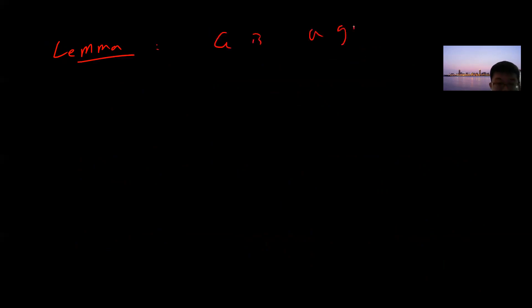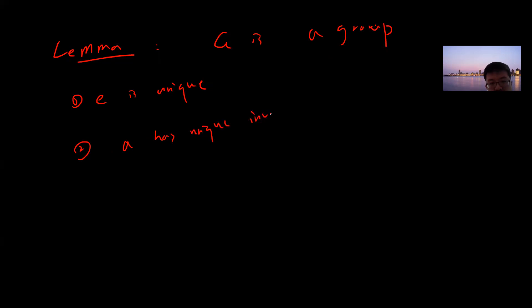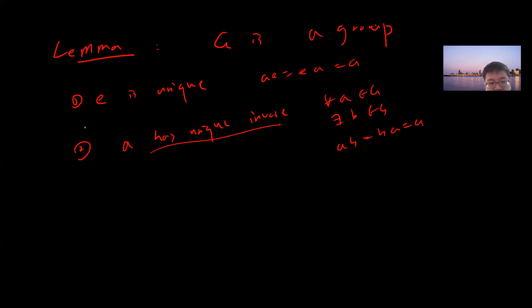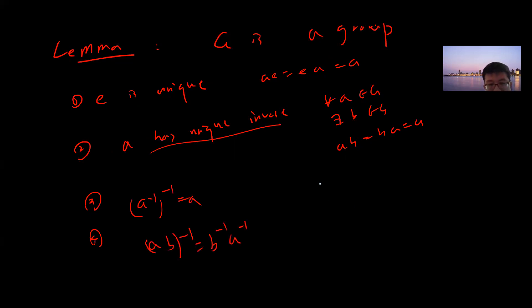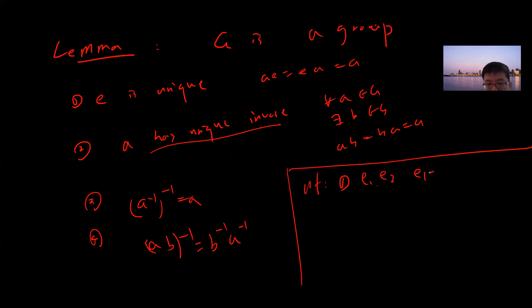Now let's state a lemma with some trivial results. In a group, first, the identity is unique. Second, each element a has a unique inverse. Proof of uniqueness of identity: suppose e1 and e2 are both identities; then e1·e2 = e1 (since e2 is identity) and e1·e2 = e2 (since e1 is identity), so e1 = e2.